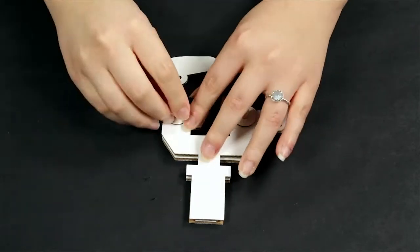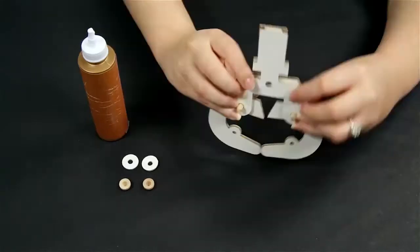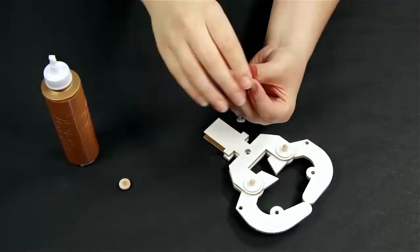Part E: Glue an end cap on the ends of the dowels. Step 7: Assemble the other side of the claw the same way.